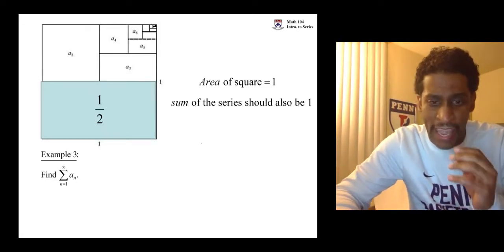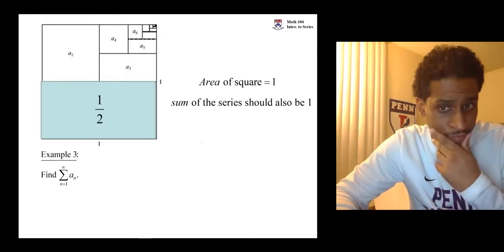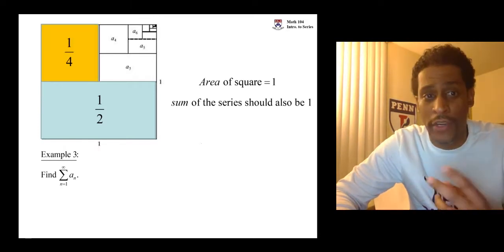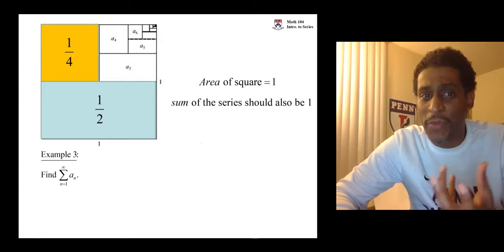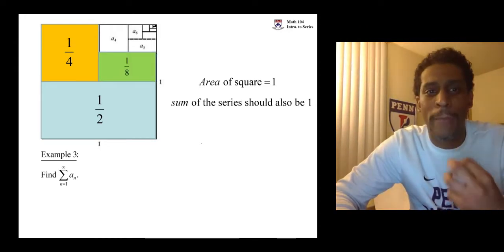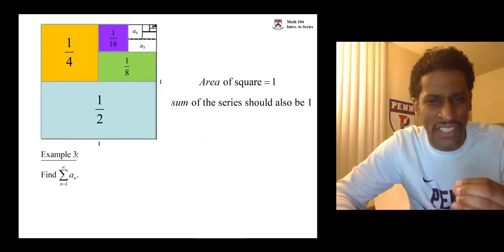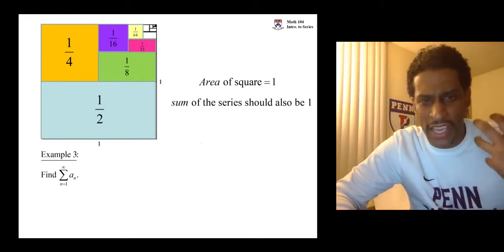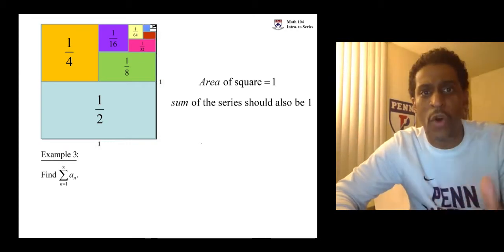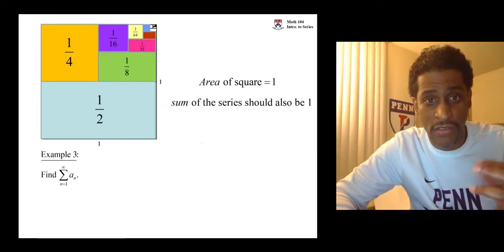a₁ is a half — the area is a half. a₂ represents an area of a quarter. a₃ represents an area of an eighth. a₄ represents an area of a sixteenth. a₅ represents an area of one over 32. a₆ represents an area of one over 64. We can go on until the whole square is filled up. If we add up these areas we should get one.